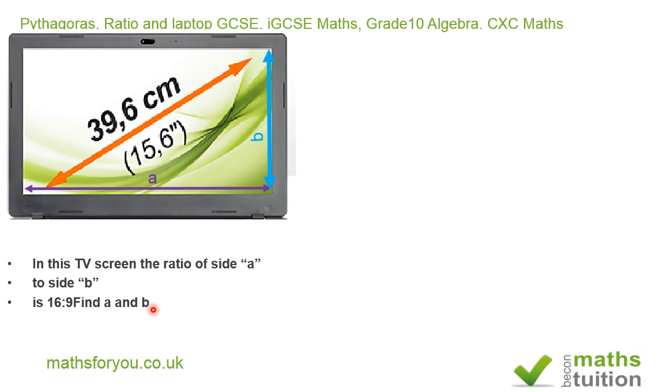Because we've got two equations and we have two unknowns there. So the Pythagoras Theorem as we know is a² + b² = (39.6)², where 39.6 is the length of the diagonal.